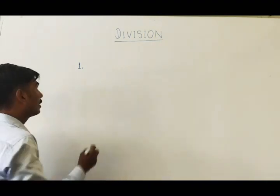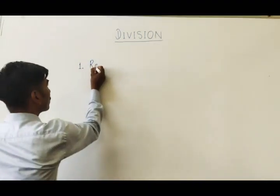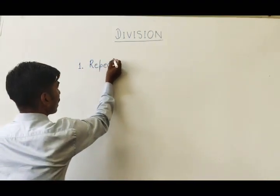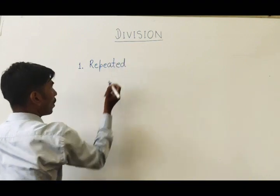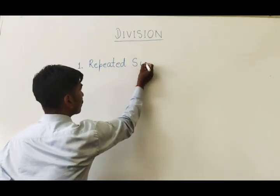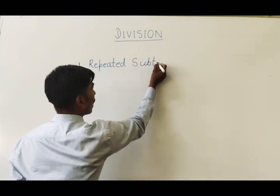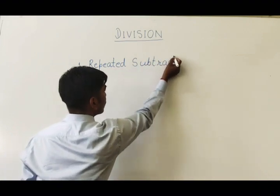The first one is repeated subtraction method. In this method one number is repeatedly subtracted until we get zero.